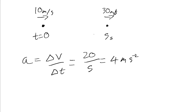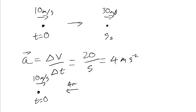Being a vector, acceleration also has a direction. We can see the velocity is increasing towards the right, so our acceleration is also towards the right. We could apply the same acceleration in the reverse direction for the same period of time. If we start again with our object at 0 seconds travelling to the right at 10 metres per second, and we apply an acceleration towards the left at 4 metres per second squared for 5 seconds, let's see what our final velocity will be. We take the equation and rewrite it: our delta velocity, our change in velocity, is our final velocity minus our initial velocity. We'll use V for final velocity and U for initial velocity.